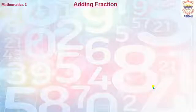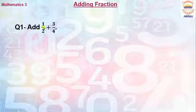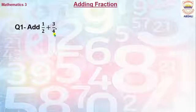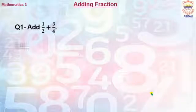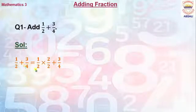Now let's understand it by an example. Here we have question number 1: Add 1/2 plus 3/4. It means we need to add both of these fractions. Let's start our solution. Here you can see our denominators are 2 and 4.